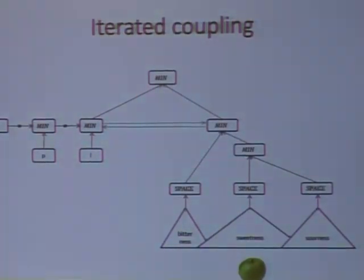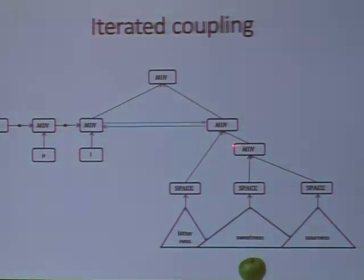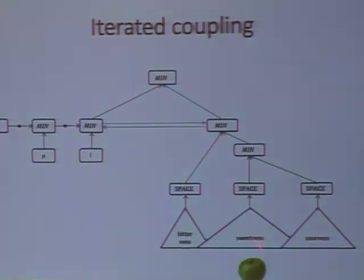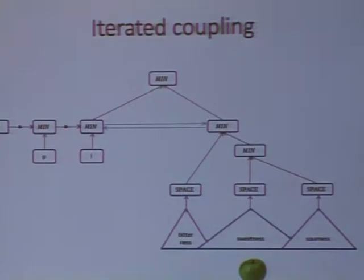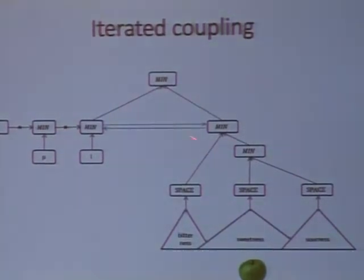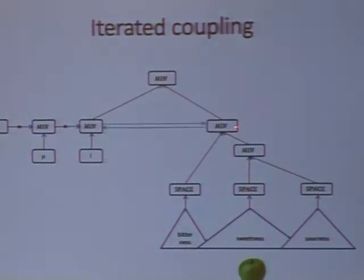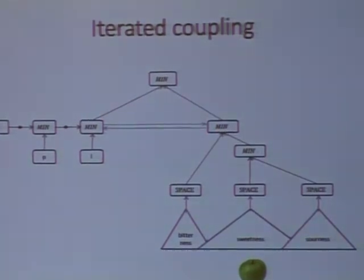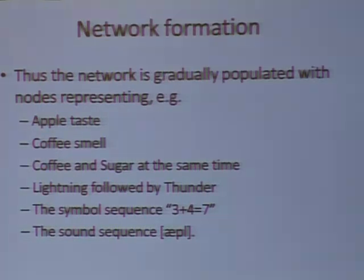These two principles alone will cause the formation of this network. For example, here we have an apple — we taste it, we remember the sweetness, the bitterness, etc., coded in nodes. This is the taste of the apple. This is the sound 'apple' and we hear it. If we eat the apple and hear someone say 'apple' at the same time, these two will become active, and this structure will develop automatically. Once we hear the word 'apple', we associate to the taste of apples, and vice versa — when we take a bite, we think of the word. In similar ways, we will develop networks containing nodes representing apple taste, coffee smell, coffee and sugar together, lightning followed by thunder, the symbol sequence 3 plus 4 is 7, and the sound sequence 'apple'.